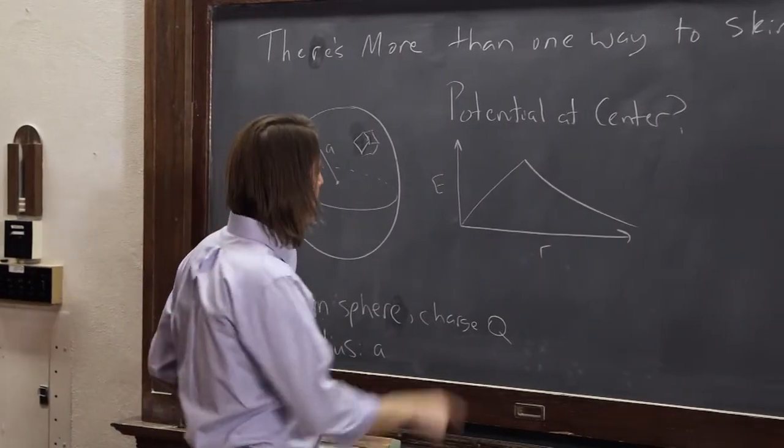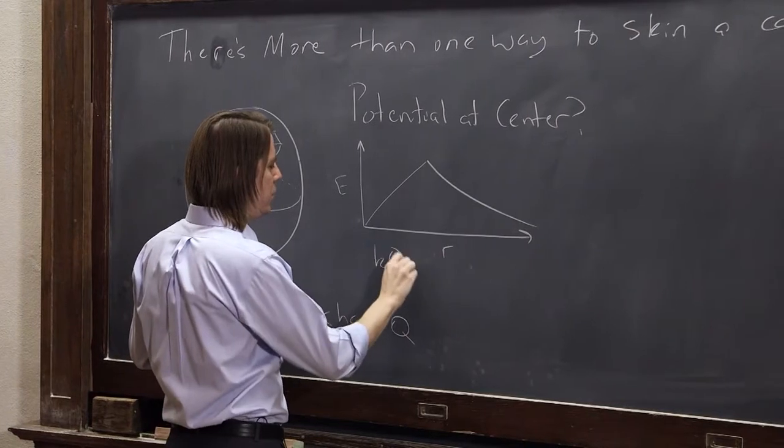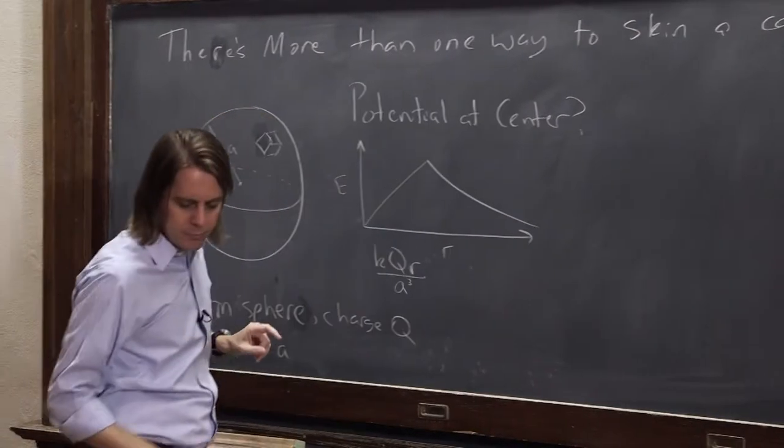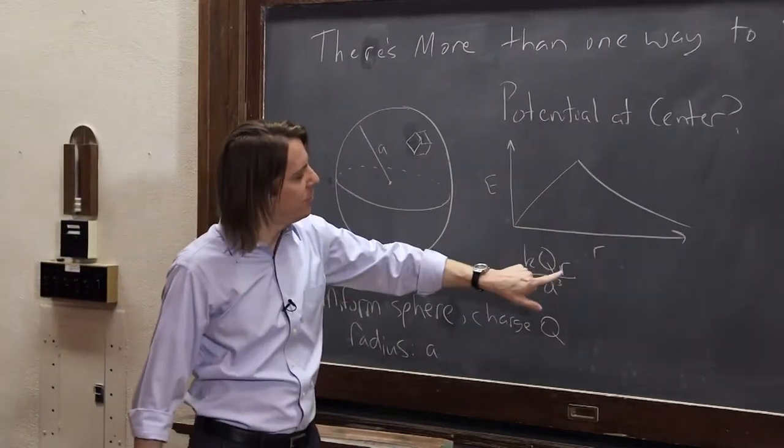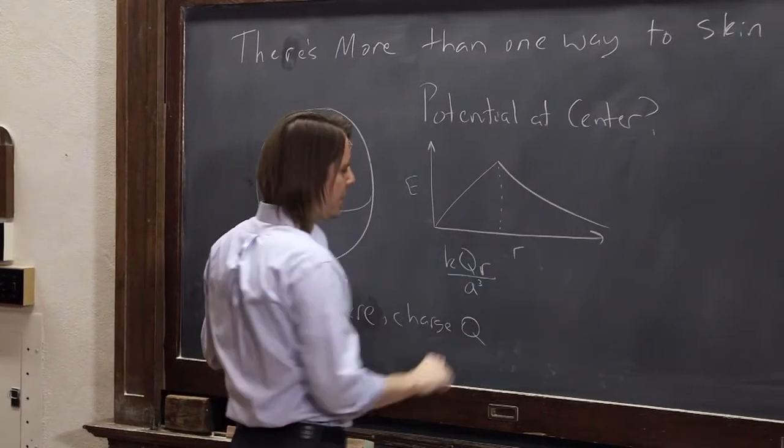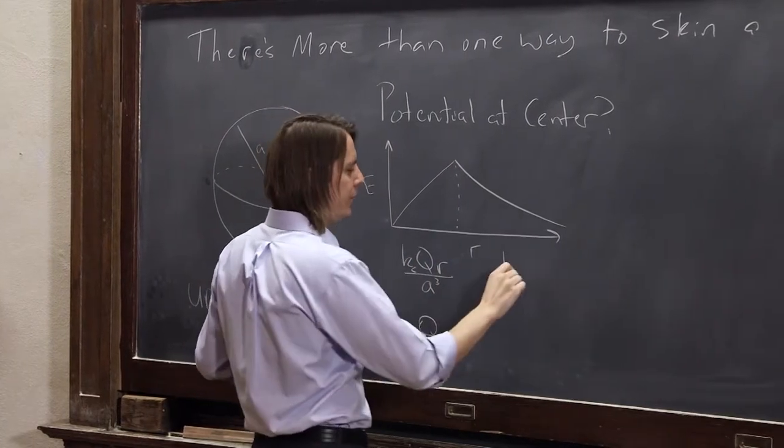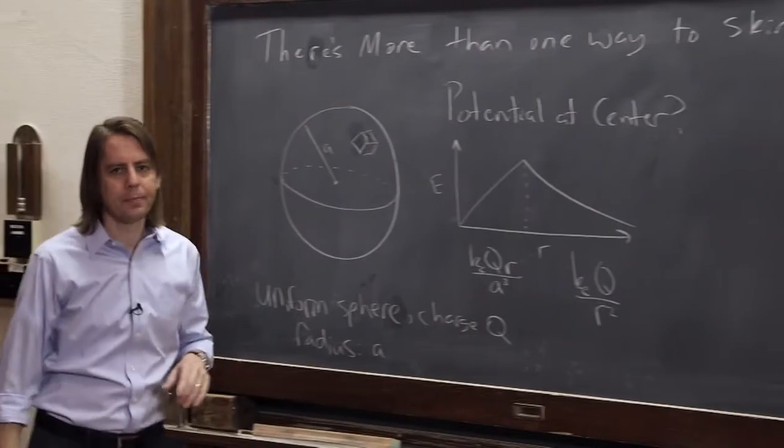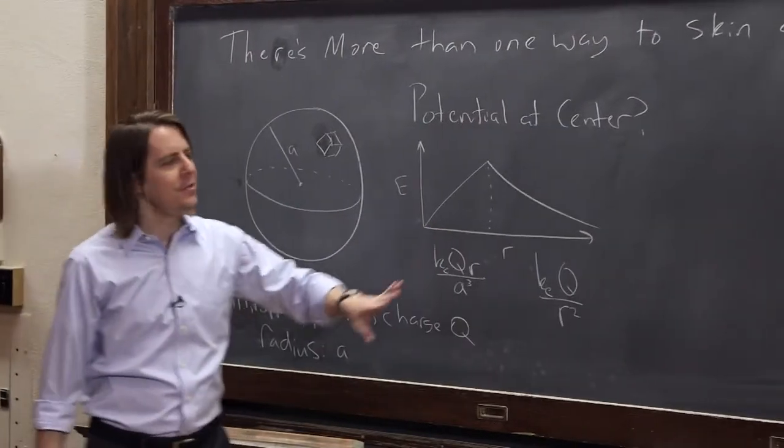In here, the actual form of it was KQR over A cubed. I think it has to be cubed. And this is the linear part. It's linear with R. And then on the other side, when it's coming down, then it's just like a point charge, KE Q over R squared, standard point charge formula. So we already have the E field.